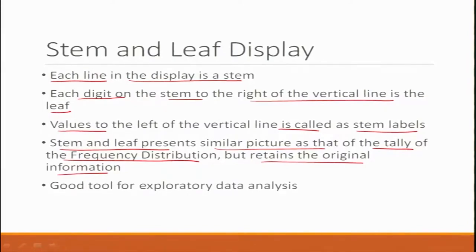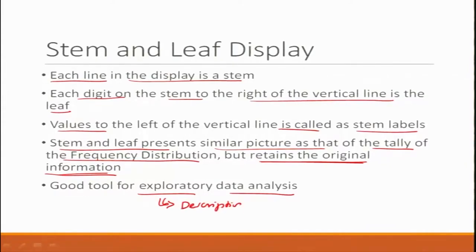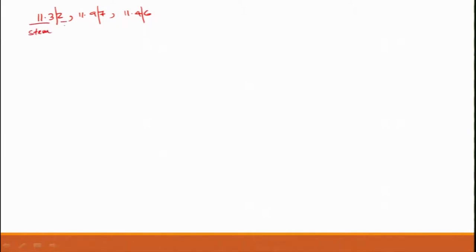The stem and leaf plot presents a similar picture to the tally of a frequency distribution but retains the original information — that is the biggest difference. It is a good tool for exploratory data analysis. For data with decimal values, such as 11.32, 11.97, and 11.46, the stem can be the integer and first decimal part (e.g., 11.3, 11.4, 11.9) and the leaf is the last digit.